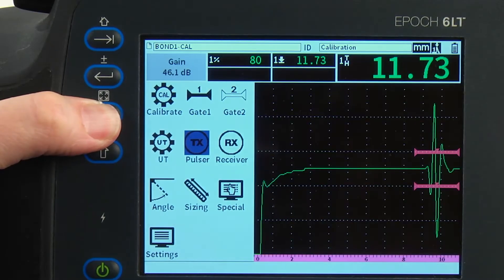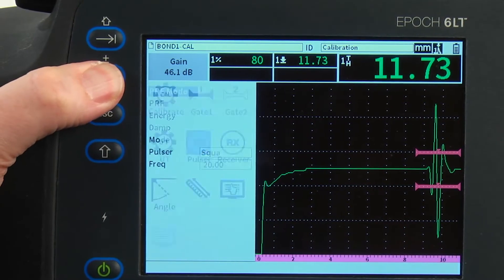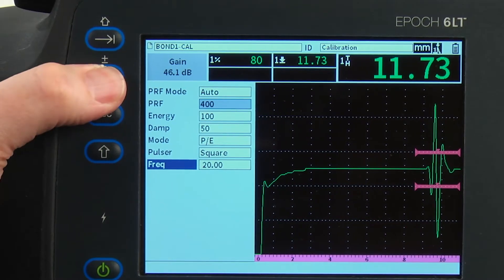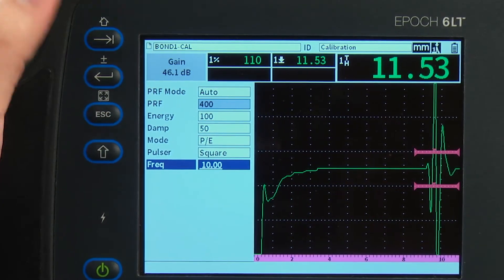A split-screen mode enables easy navigation for pulsar and receiver configuration, as well as calibration and other setup steps while still viewing the A-scan.